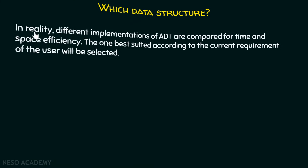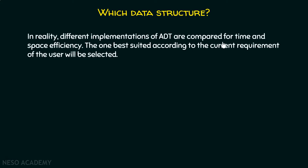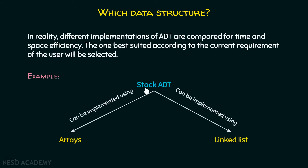Which data structure? In reality, different implementations of ADT are compared for time and space efficiency. For example, we know that stack ADT can be implemented using arrays or linked lists. We can compare these two data structures for time and space efficiency. The one best suited according to the current requirement of the user will be selected. Maybe one data structure will lead to space efficiency, while another data structure will lead to time efficiency. We will select the one according to the current requirement of the user. Maybe the user wants to save space, then we can use a particular data structure which can save space. Maybe a user wants to run the program faster, then we will use the data structure which will run faster. So the one best suited according to the current requirement of the user will get selected.